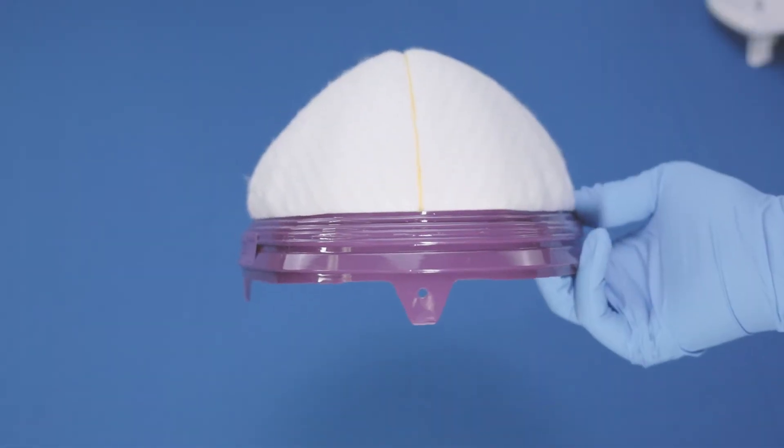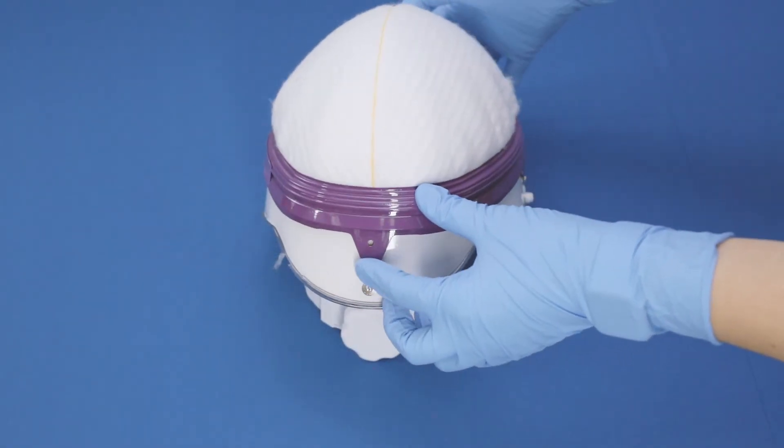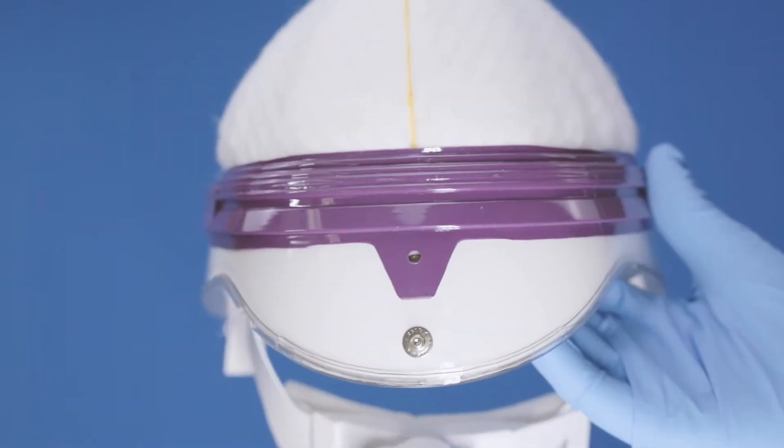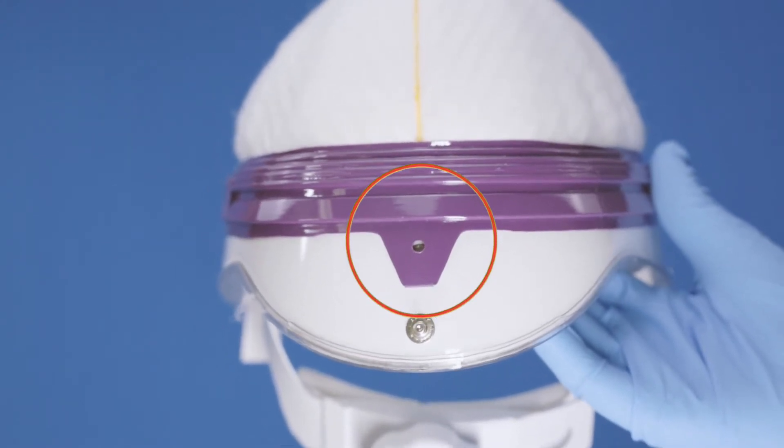Begin filter cartridge assembly by grasping the magenta retainer ring and lowering the cartridge down onto the top of the helmet. Position the rear cartridge snap tab at the rear of the helmet with the snap tab hole over the top rear helmet snap.